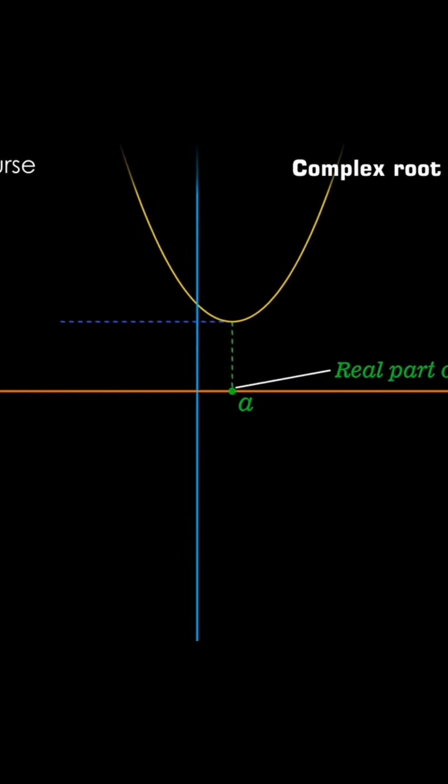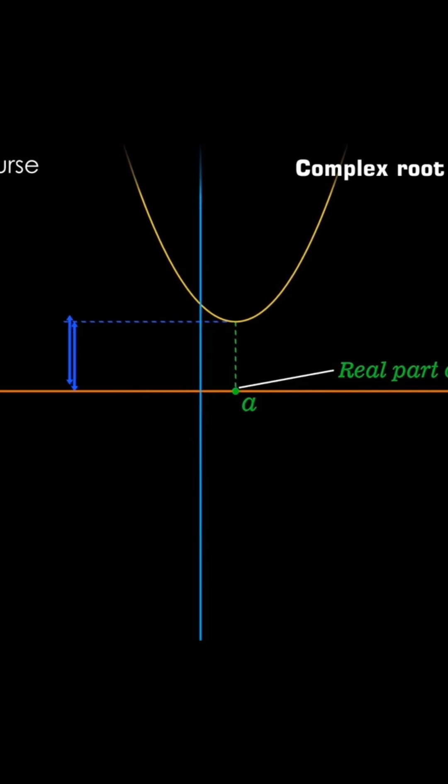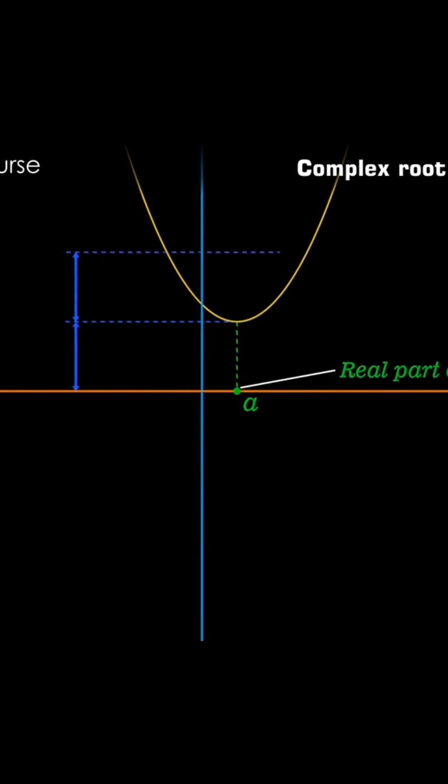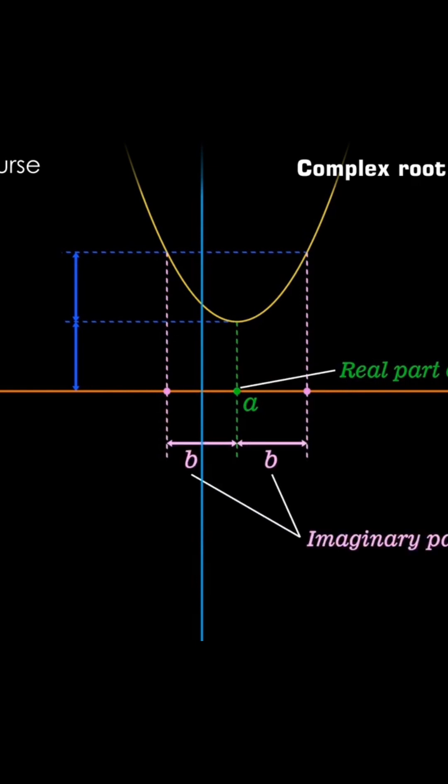Now draw a horizontal line at height twice the height of the vertex from the x axis. Draw vertical lines from these point of intersections to intersect x axis. The distance of these points from the real part of the root gives you the imaginary part of the root.